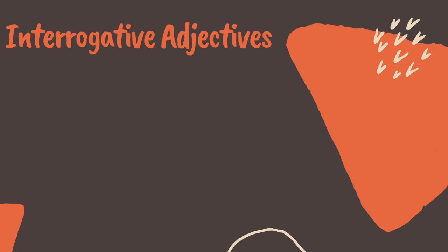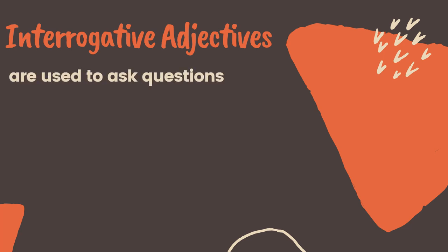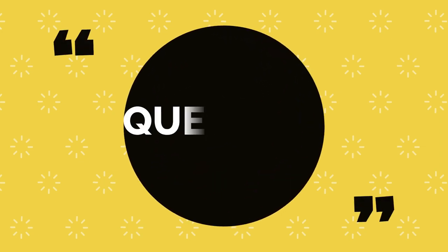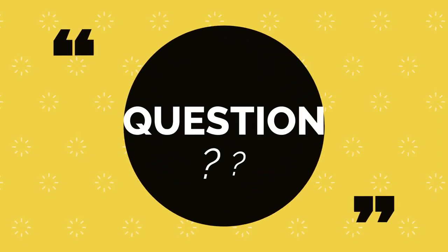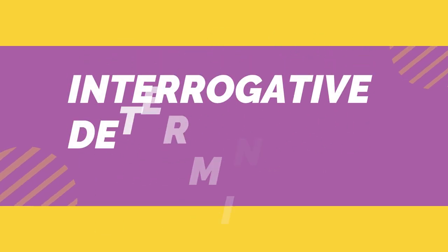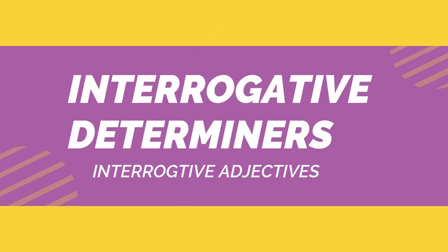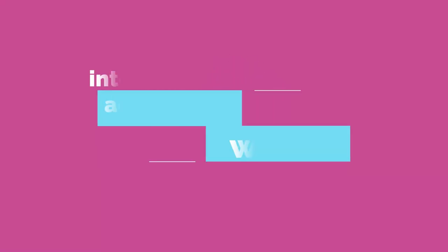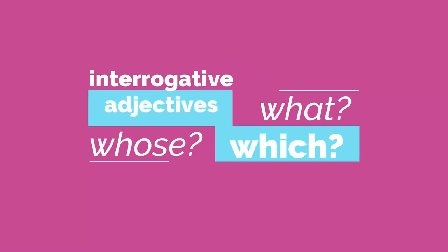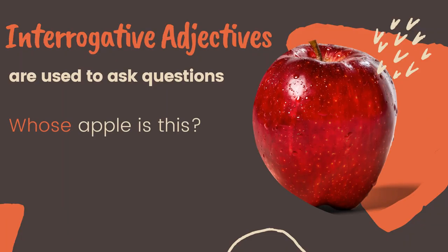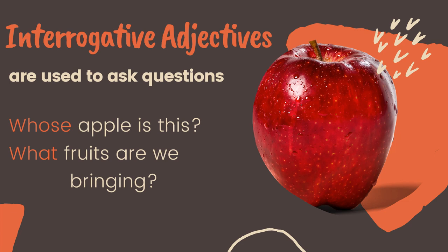Interrogative adjectives are used to ask questions. An interrogative adjective is a word that modifies a noun by asking a question. They are also known as interrogative determiners. These adjectives are what, which, and whose. For example, 'Whose apple is this?' — whose is an interrogative adjective that modifies the noun apple. In the sentence 'What fruits are we bringing?' — what is an interrogative adjective that inquires about the specific kind of fruits they need to bring.